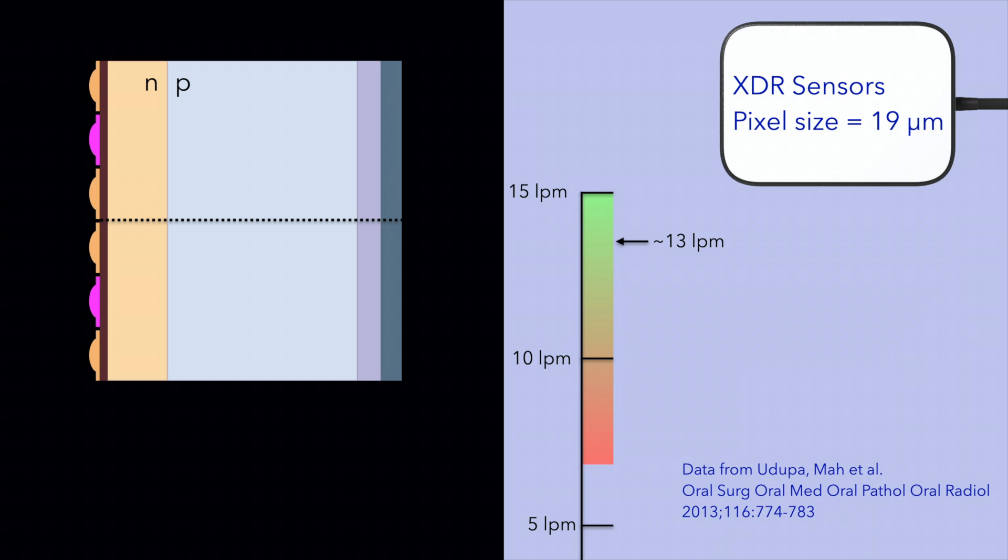On a practical basis, however, the resolution of the image is much lower than 26 line pairs per millimeter. This depends on the X-ray tube that you use, the size of the focal spot, scatter radiation from the patient, electronic noise within the detector, and so many other elements.